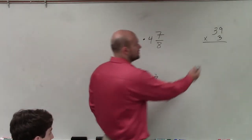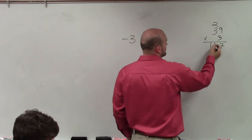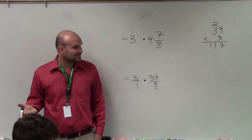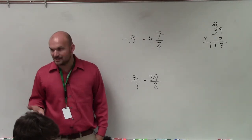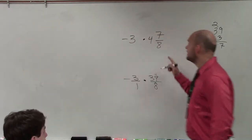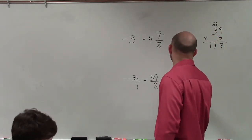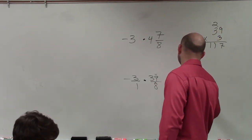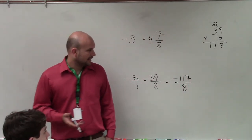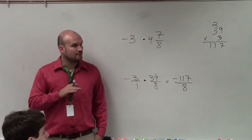So since we're not using our calculator, just multiply using our multiplication algorithm — do it vertically. Basically, 3 times 9 is 27; 3 times 3 is 9, plus 2 is 11. It's okay to use that — put it on the side of the paper. It is important to remember that yes, you're multiplying that by a negative, so therefore that is equal to negative 117 divided by 8. Now we want to make sure — can we simplify that any further? I do not believe we can.